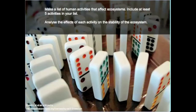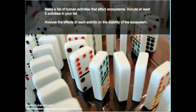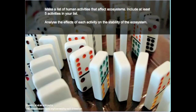As we end today's lesson, I would like you to make a list of human activities that affect ecosystems — include at least five activities and analyze the effects of each on the stability of the ecosystem. This background picture was selected for one obvious reason, but there's another reason that goes beyond the mere domino — that reason has to do with elephants, and that will become part of our discussion in section 4.2.